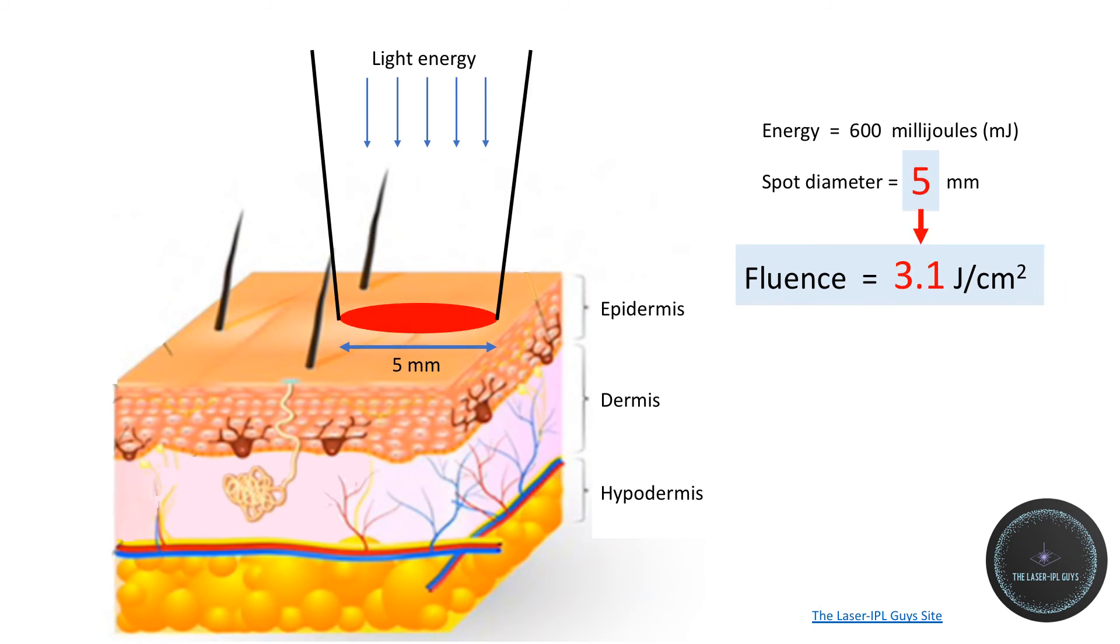Going back to the original 5 millimeter diameter, you can see the fluence drops back down to 3.1 joules per square centimeter, but a 5 millimeter diameter is 25 times the area of a 1 millimeter diameter spot.